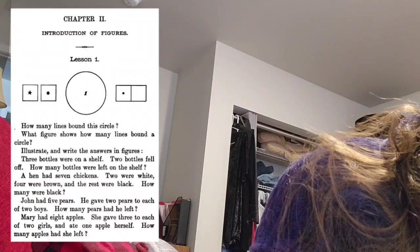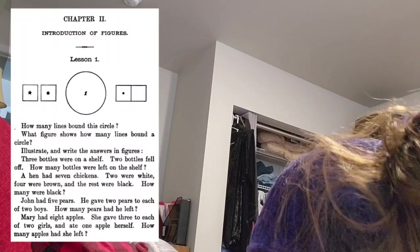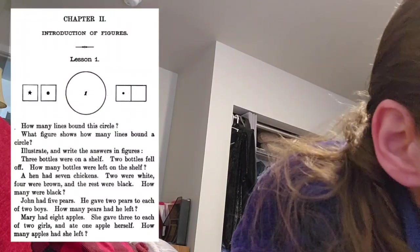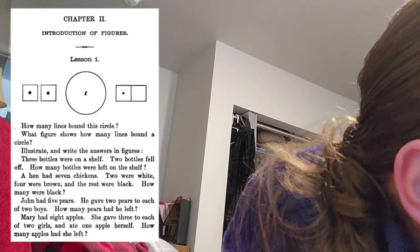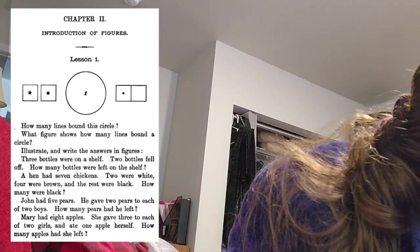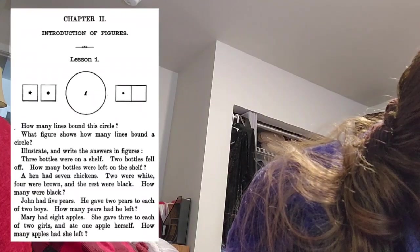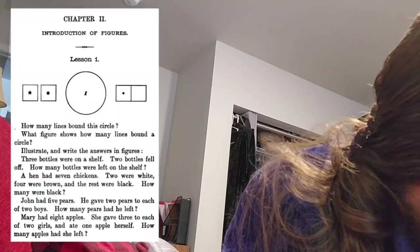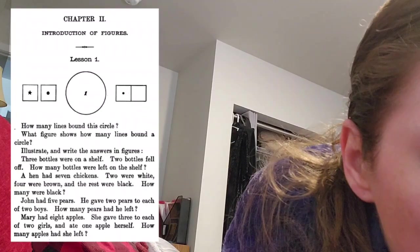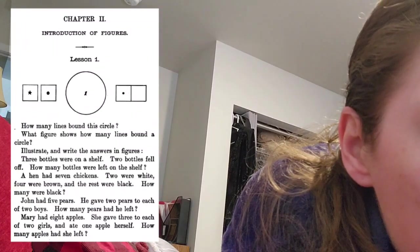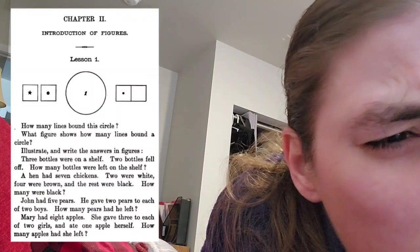Mary had eight apples. She gave three to each of two girls and ate one apple herself. How many apples had she left? Okay, she had eight and she gave three to two girls, so that's six. And then she had eaten one, so she would only have seven. No, she would have one left over. Yeah, she would have one left over.